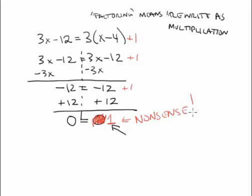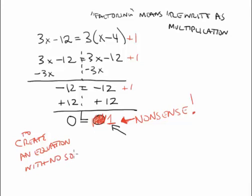If 0 equaled 1, then we would have a lot of problems with our bridges, and we would have a lot of problems with our cell phone signals, and all the other ways that math is used to basically create the world we live in. So you can, to create an equation with no solutions, you can do something very similar.